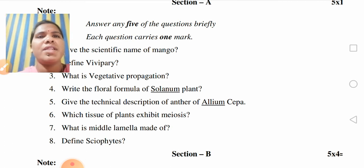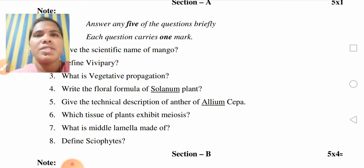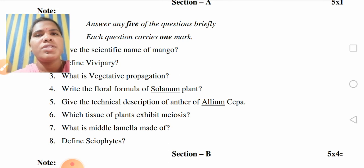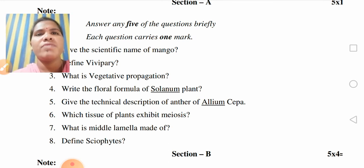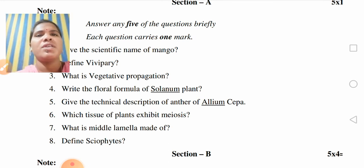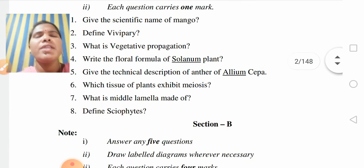Which tissue of plants exhibit meiosis? What is middle lamella made of? Define sciophytes. So these are all some of the 8 questions under Section A. In Section A, 8 questions will be there. You have to answer 5 questions with no choice. Each question carries 1 mark, so 5 into 1 equals 5 marks.